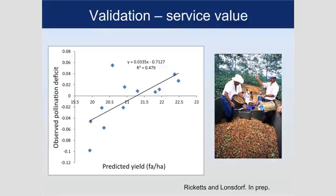We can also ask: what's the predicted yield from the model and what's the observed pollinator deficit that I showed you in that other graph? And again, as far as ecological systems go, I'm pretty pleased with how predictive it is. So we're doing some validation to see whether this model's doing what we think it should do.